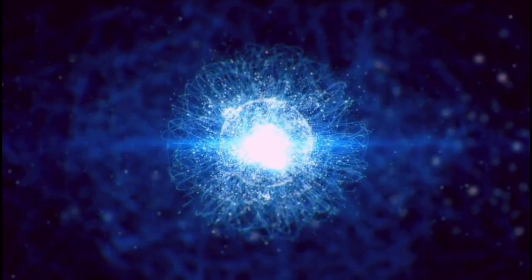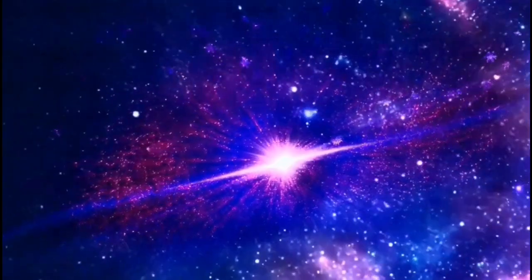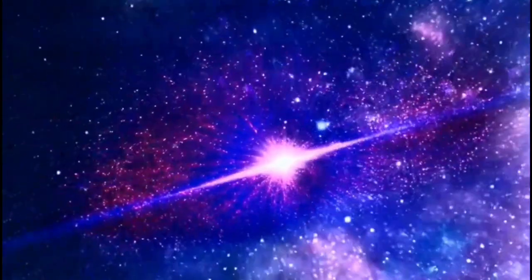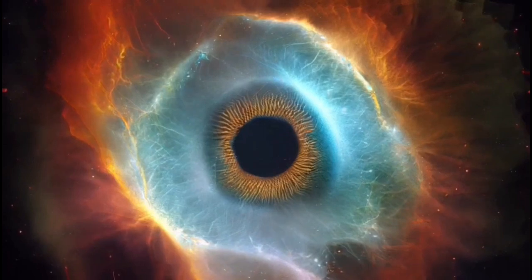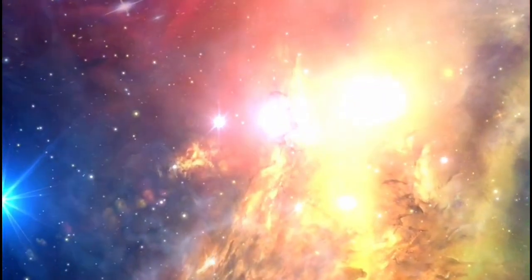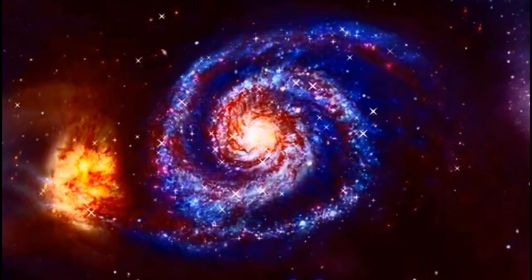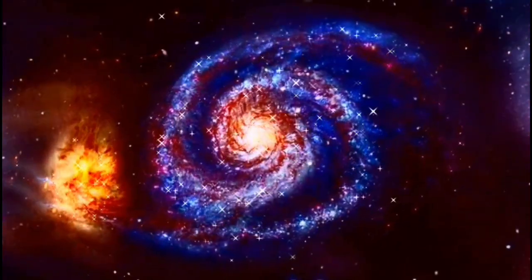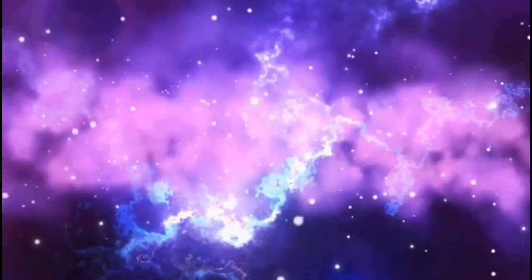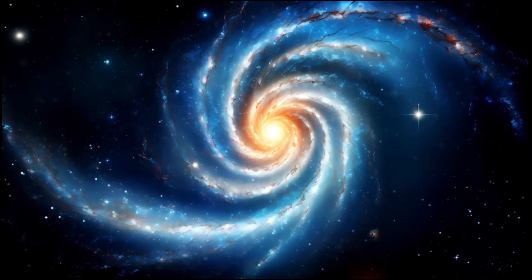What we are observing in Betelgeuse challenges our understanding of how stars behave. Although we are familiar with the death process of giant stars, the data from Betelgeuse suggests that we might have been underestimating the complexity of this phase. The James Webb images don't just show the death throes of a star. They also invite reflection on cosmic timescales and our place in the universe. If Betelgeuse were to explode into a supernova, the event would light up our night sky for weeks. Although there is no immediate danger to us, the explosion would dramatically alter our comprehension of the universe.